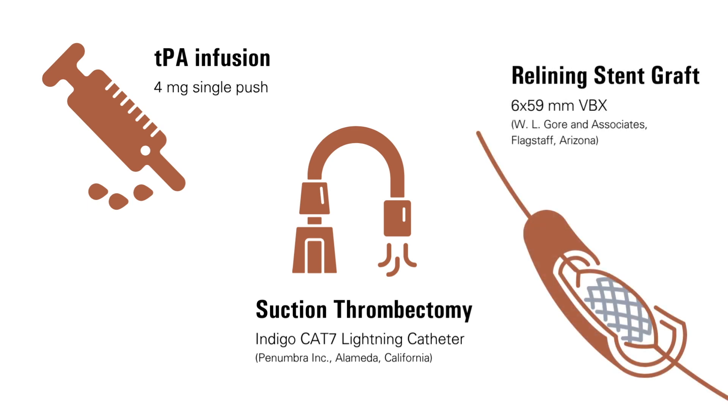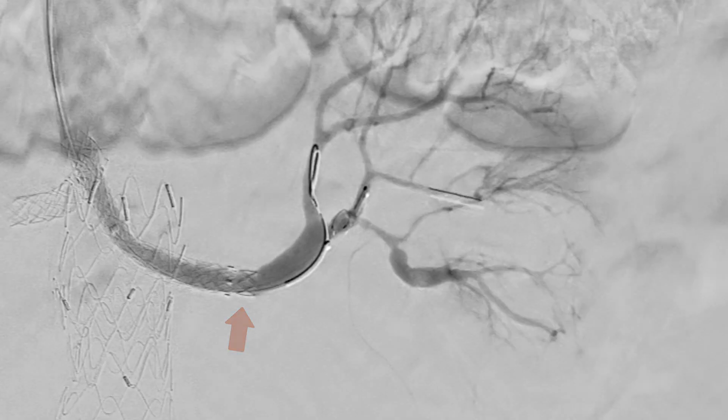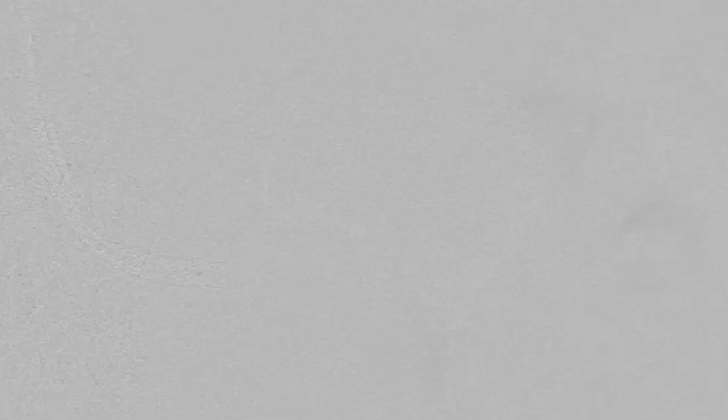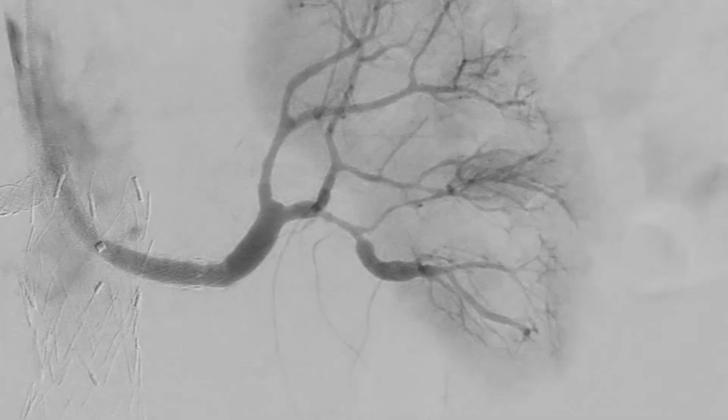We then relined the original stent with a 6x59 balloon expandable VBX. In the next shot, we highlight the original snorkel graft and the newly installed VBX inside it. We removed our devices and performed one last angio of the left renal artery, with excellent contrast blush in the kidney. Lastly, we shot one picture of the abdominal aorta to confirm the entire repair was still intact.